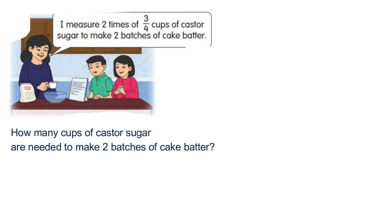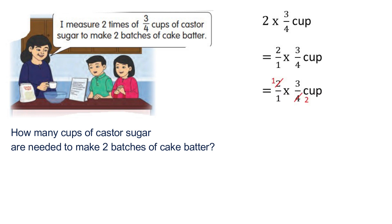For method two, we will do a normal calculation to multiply two with three over four. Convert the whole number to an improper fraction: we will have two over one, multiply three over four. Multiply numerator with numerator.